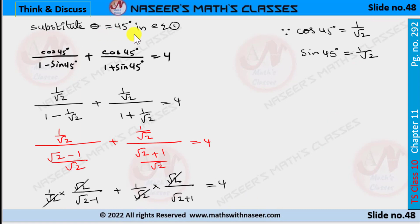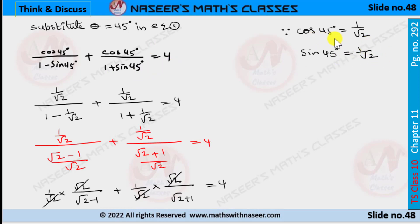Now substitute θ = 45° in equation 1. It can be written as cos 45° / (1 − sin 45°) + cos 45° / (1 + sin 45°) = 4. We already know sin 45° = 1/√2 and cos 45° = 1/√2. Then it can be written as (1/√2) / (1 − 1/√2) + (1/√2) / (1 + 1/√2) = 4.